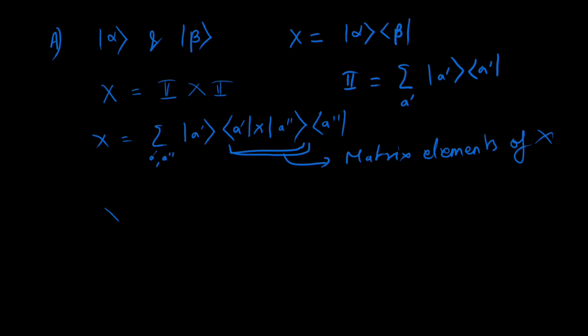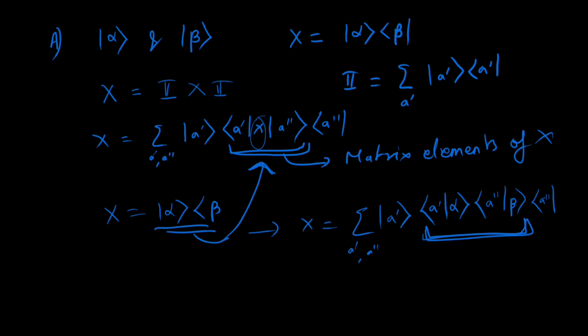Since we have been given that x is equal to alpha beta, we just put this value in the position of x right over here. So we get x is equal to sum over a prime and a double prime of a prime, a prime alpha, and a double prime beta, a double prime. So this here represents the matrix elements of x that we need.